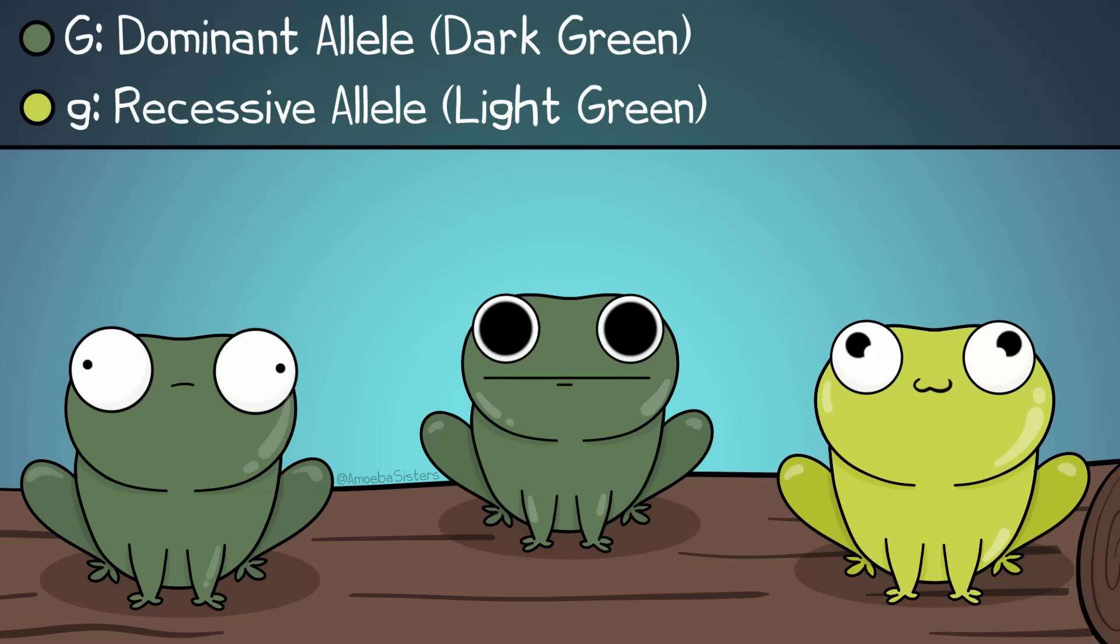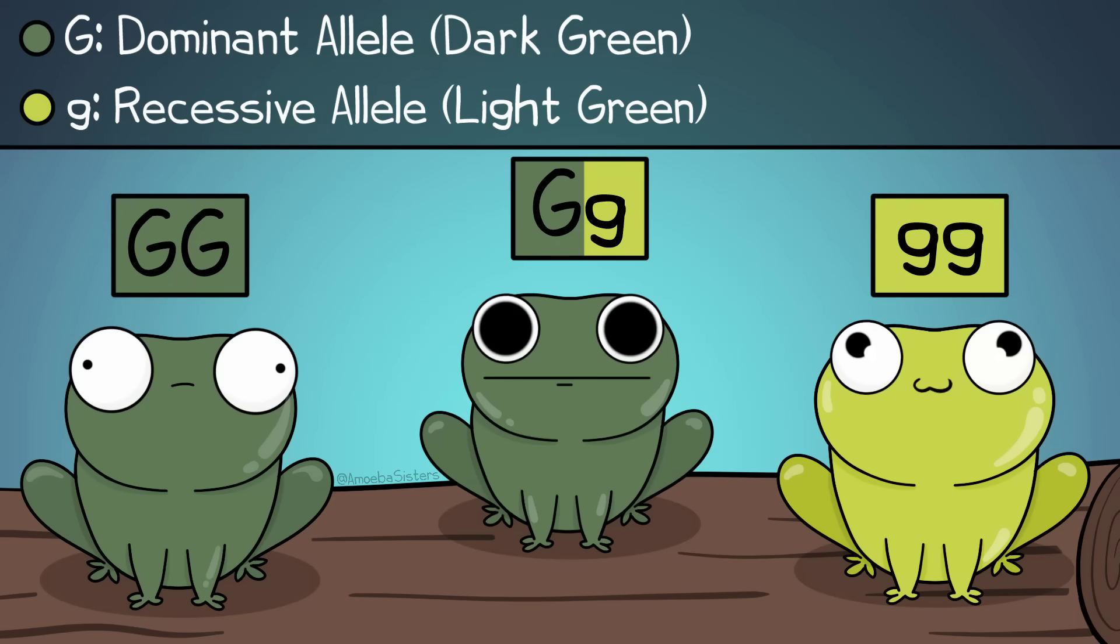We're going to use a simple genotype in this example. All frogs in this population will be either big G big G, big G little g, or little g little g. There is also an allele frequency in our population. We're going to say here that 60%, a frequency of 0.6, of the alleles are big G. 40%, or a frequency of 0.4, of the alleles are little g. Notice the percentages add up to 100% and the frequencies add up to 1.